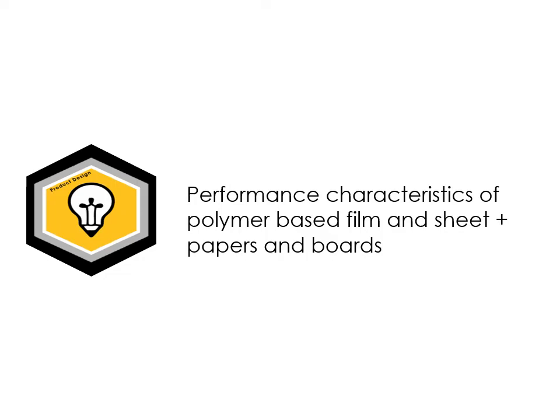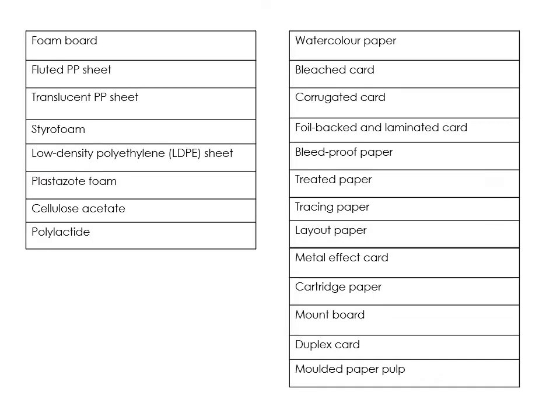Hi everyone. This is a revision video for the topic of polymer-based film and sheet, and papers and boards. This covers the section in the revision guide on performance characteristics of these two areas of materials. These are not the two most exciting sections, but let's get into it. You need to have an awareness of these materials, know what they're used for, and know one or two properties of each.